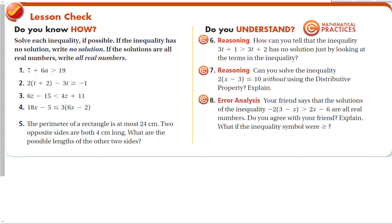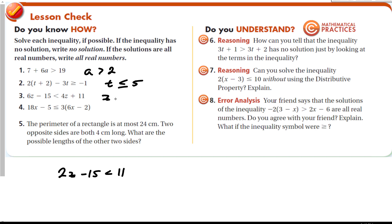For the first one, subtract 7 from both sides and divide by 6, giving a is greater than 2. For the second, distribute the 2, subtract off the 3, giving t is less than or equal to 5. For the third, subtract negative 4 from both sides to get 2z minus 15 is less than 11, then add 15 and divide by 2, giving z is less than 13.